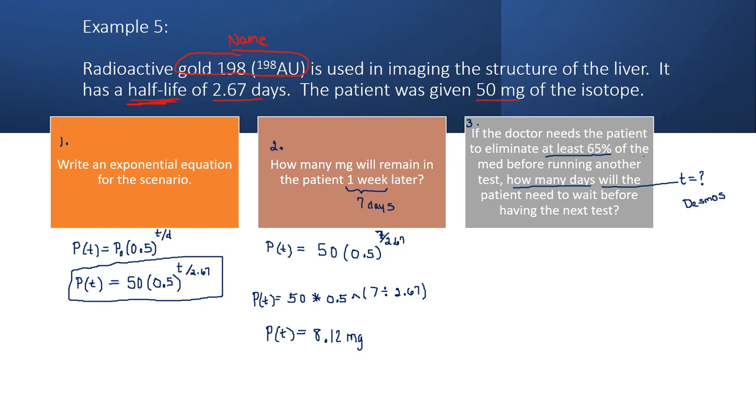So this problem did not give me an amount that they're looking for. So it's not like when the patient has five milligrams remaining, they can run the next test. It gave me a percentage. And so I really need to understand what my model means in order to use that percentage. So all of our models calculate P(t). And P(t) is a population at some point in time. And since it is a population, it is what remains.